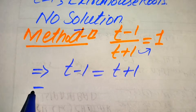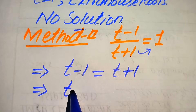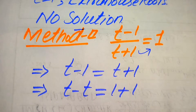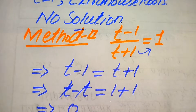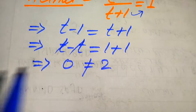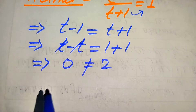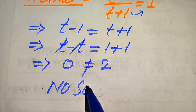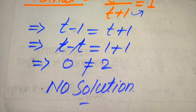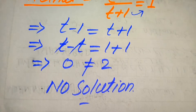Moving variable terms to the left-hand side: t - t - 1 = 1, so 0 = 1 + 1, which gives 0 = 2. Since 0 ≠ 2, this is not possible. Therefore, in the second method we also conclude that this equation has no solution. Both methods give the same answer. Thank you for watching — please subscribe to my channel for more exciting videos.